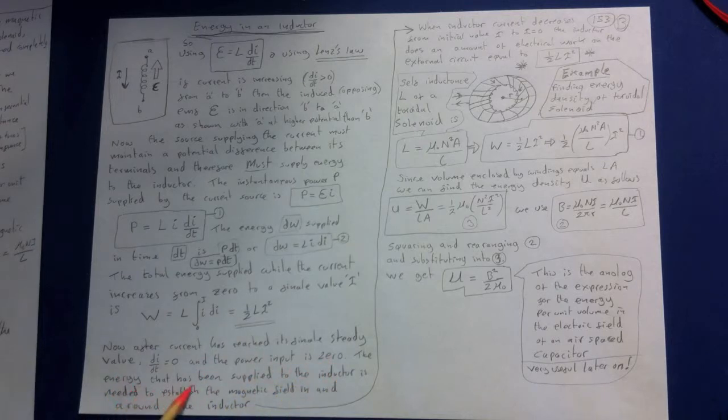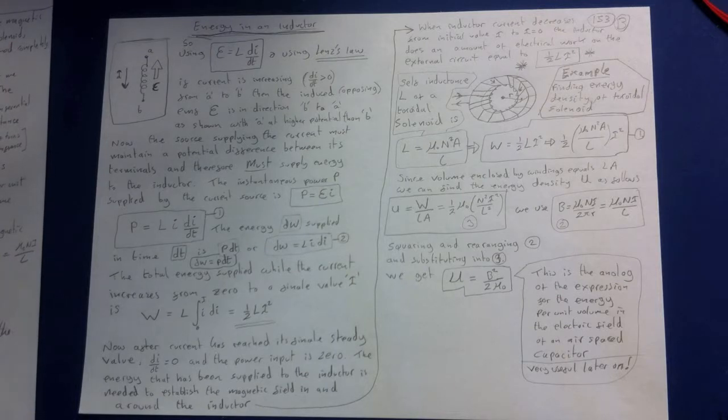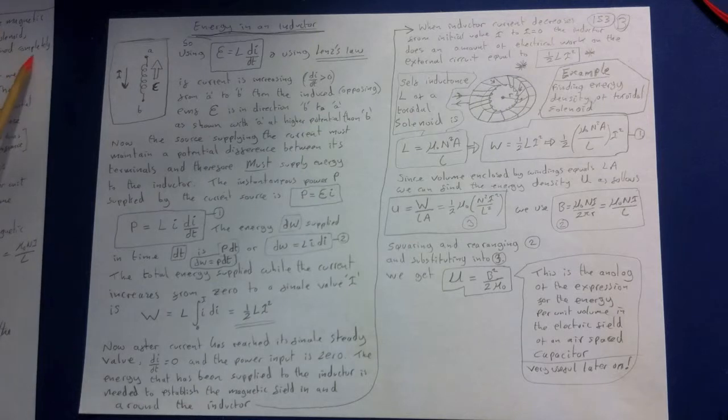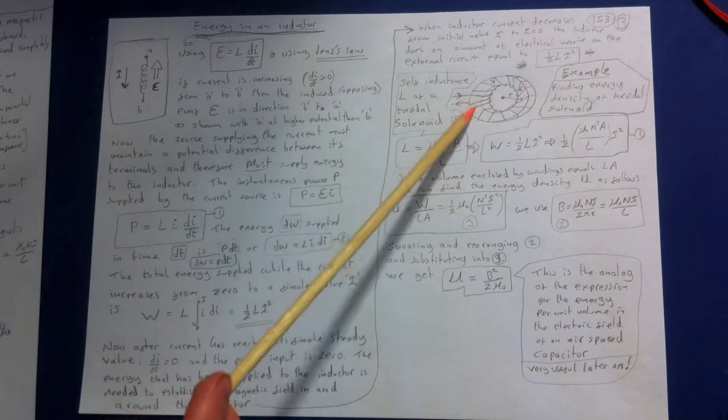The energy that has already been supplied to the inductor is needed to establish the magnetic field in and around the inductor. We can also consider the energy be associated with the magnetic field itself by considering a very simple case, the toroidal solenoid. This system has the advantage that its magnetic field is confined completely to a finite region in space in its interior. So you can see it's confined completely in here.